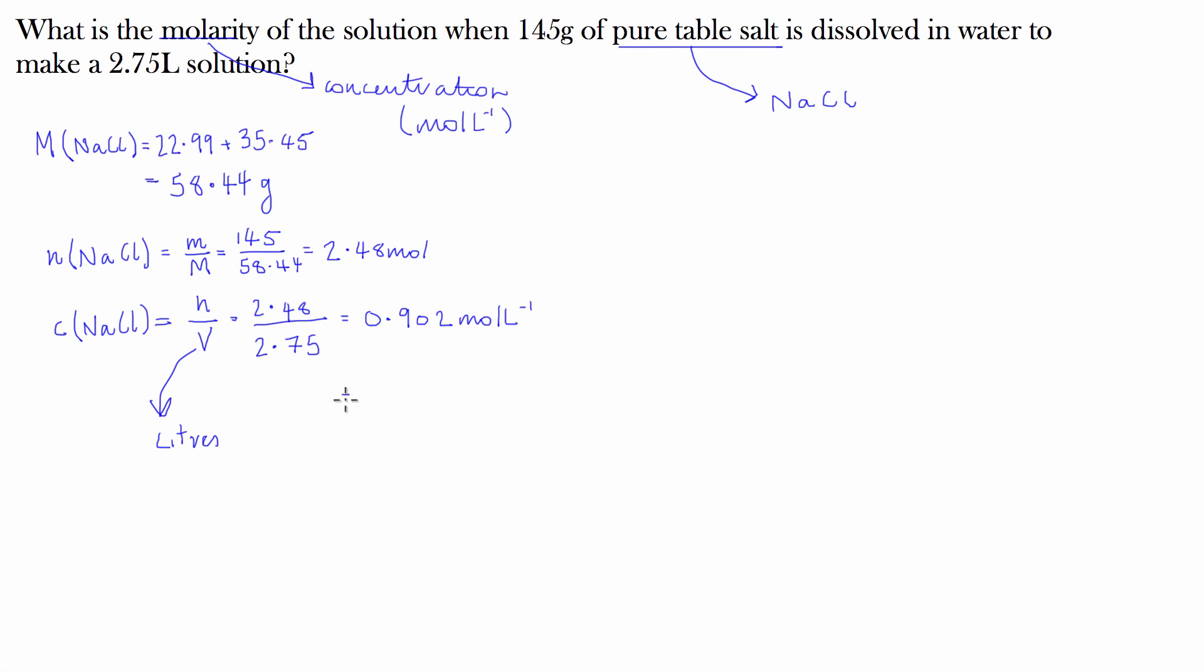A lot of teachers or examiners like to have the final solution in scientific notation. So in this case, it's going to be 9.02 times 10 to the negative 1 moles per litre. So a fairly simple problem, but it comes up a lot in chemistry exams.